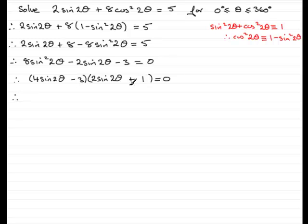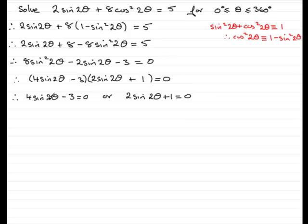Once we factorize we can set each factor equal to zero: 4sin(2θ) − 3 = 0, or 2sin(2θ) + 1 = 0. Each of these equations can be solved since they each contain just sin(2θ). They're going to require quite a bit of space so I'll do each one individually.